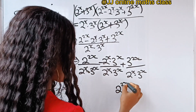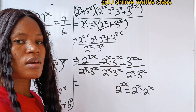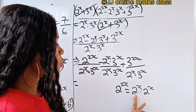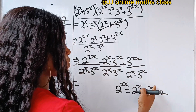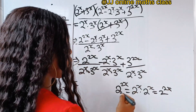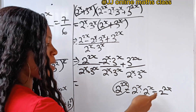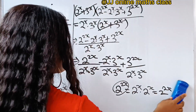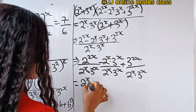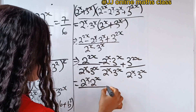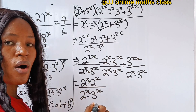Now when we simplify the numerator, 2^(2x) is expressed as 2^x multiplied by 2^x — using the law of indices, same base 2, powers x plus x equal 2x. So this section has 2^x · 2^x divided by 2^x · 3^x. Similarly, 3^(2x) is 3^x · 3^x, divided by 2^x · 3^x.